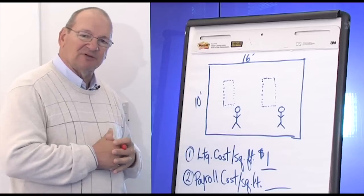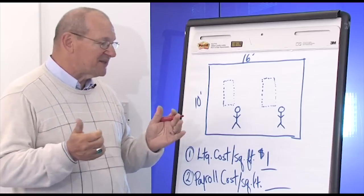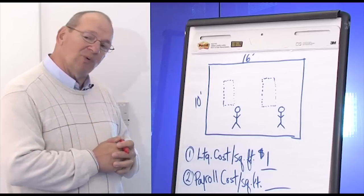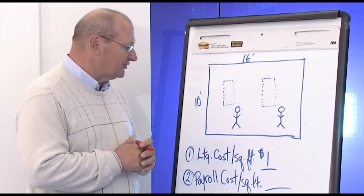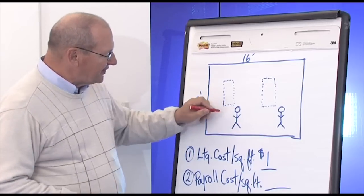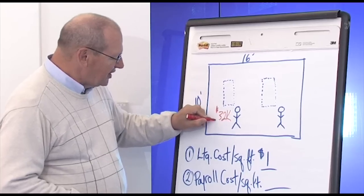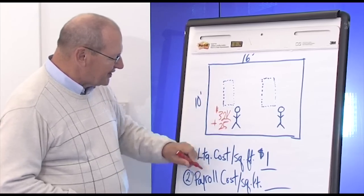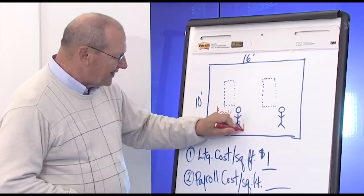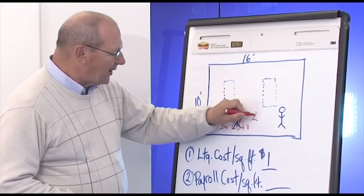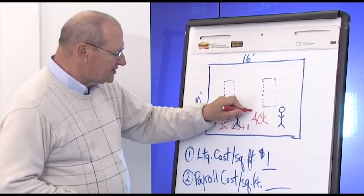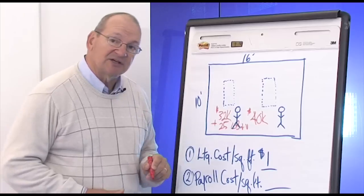Lighting costs per square foot in a typical office, about a dollar a square foot. But what's the payroll cost per square foot? We have two people here, each earning about $32,000 a year, plus a 25% labor burden and benefit, or about $40,000 a year each cost to the company. That's $80,000.